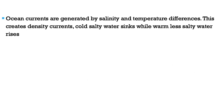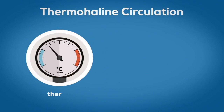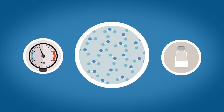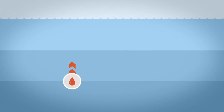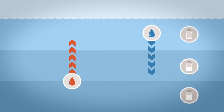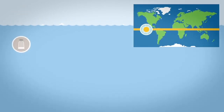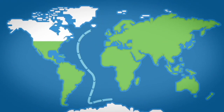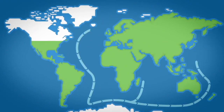Ocean currents are generated by differences in salinity and temperature. Salinity refers to the amount of salt in the water — more salty water is denser and more likely to sink, while less salty water is less dense and rises, creating density currents. Cold salty water sinks while warm less salty water rises. Warm currents are generated around the equator and move toward the poles, while cold water moves back down toward the equator.